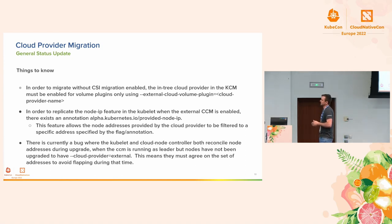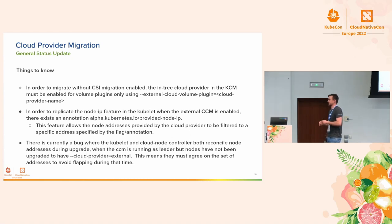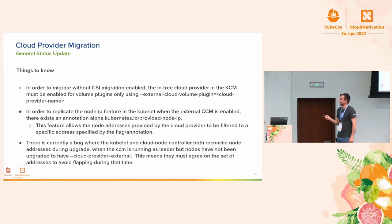There was a bug where Kubelet and the cloud node controller were both trying to reconcile at the same time. We have a fix that will always provide this annotation so that filtering happens and they agree. There's also a slightly better long-term fix we're considering, which would basically prevent them from ever trying to do that reconciliation at the same time. Currently, as long as they agree, you won't have a flapping situation where addresses are going back and forth.